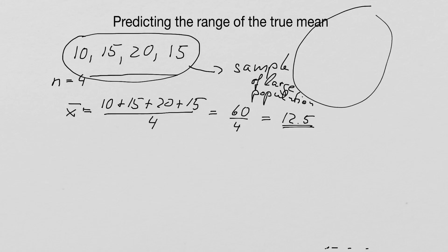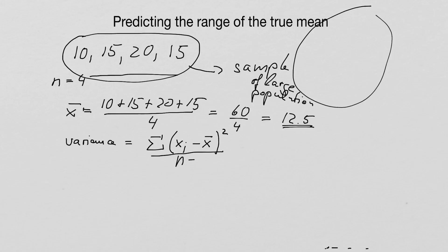Now we also want to look at the spread of the samples, and for that we calculate the variance. The variance in general is calculated by taking each observation, subtracting the sample mean, squaring it, and dividing by n minus 1. This n minus 1 is characteristic when we deal with samples.